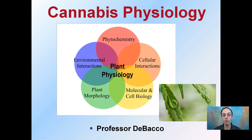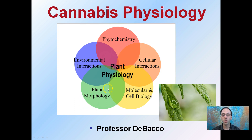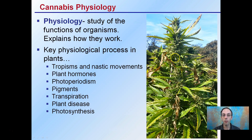Looking at cannabis physiology — a lot of times people think physiology means the physical parts of the plant, but that's not the case. This has to do with how the plant works, or the interior components of the plant. Plant morphology is actually how the plant looks and its basic structures, while physiology takes that into consideration along with cellular interactions, cellular biology, and a bunch of other things. Physiology is the study of the functions of organisms — it tries to explain how they work.